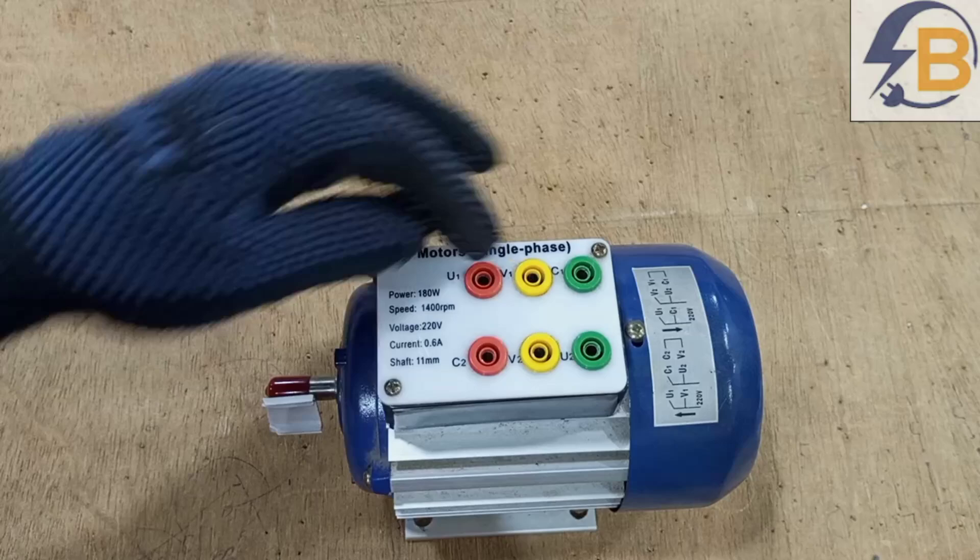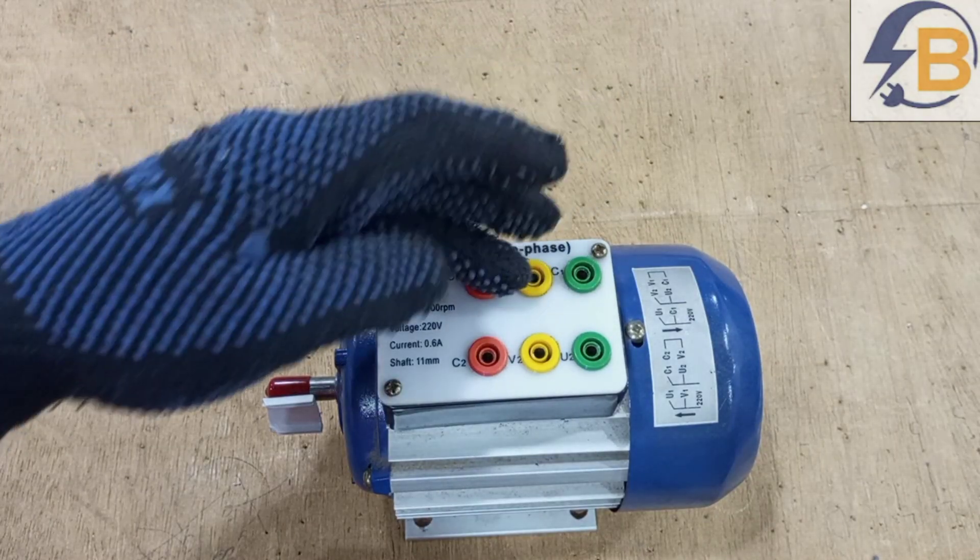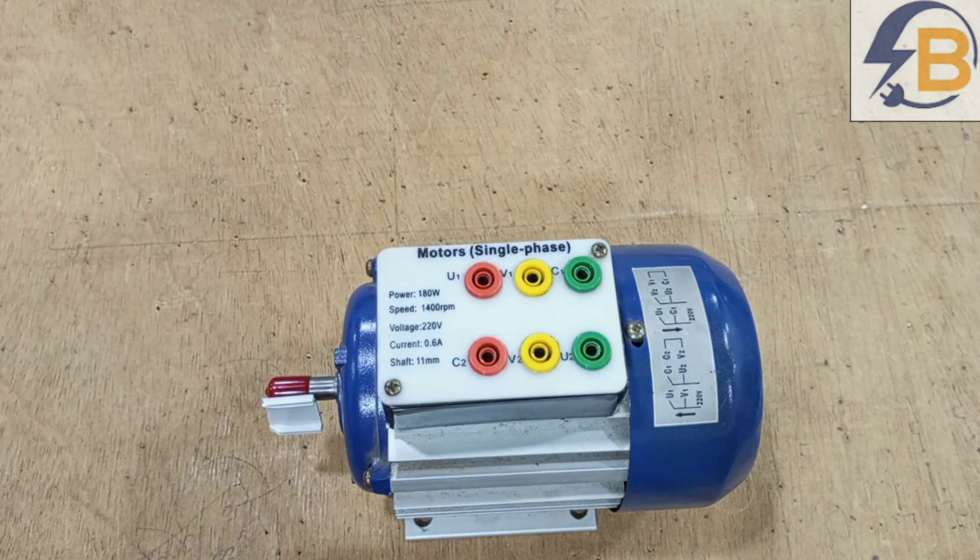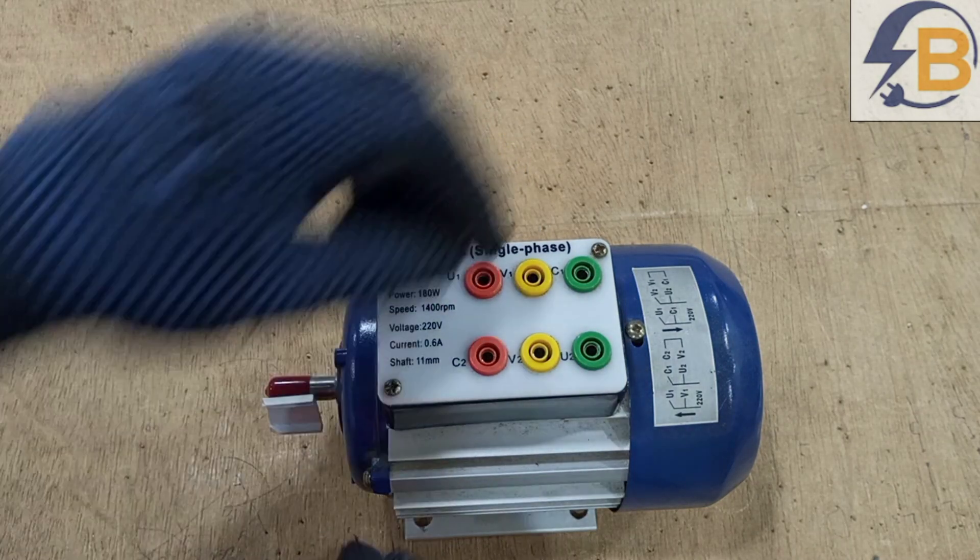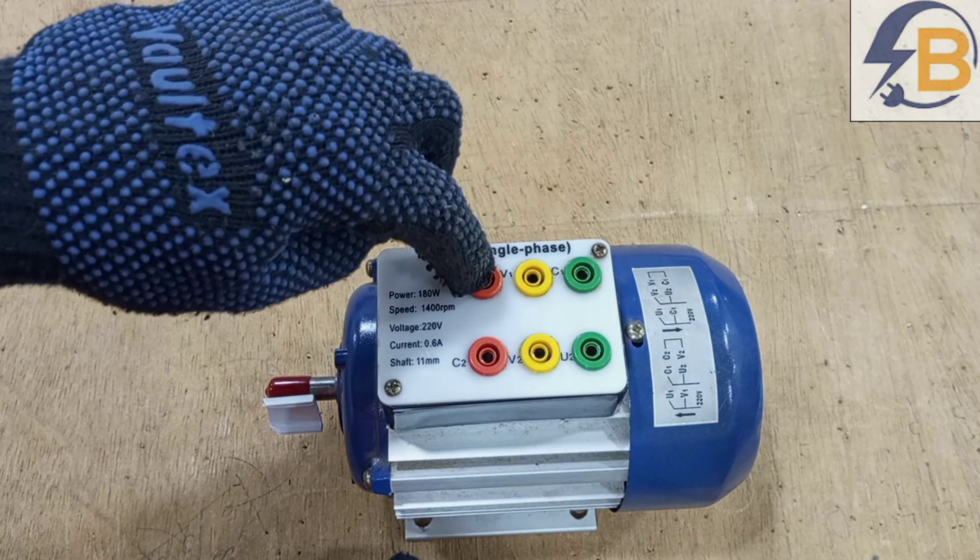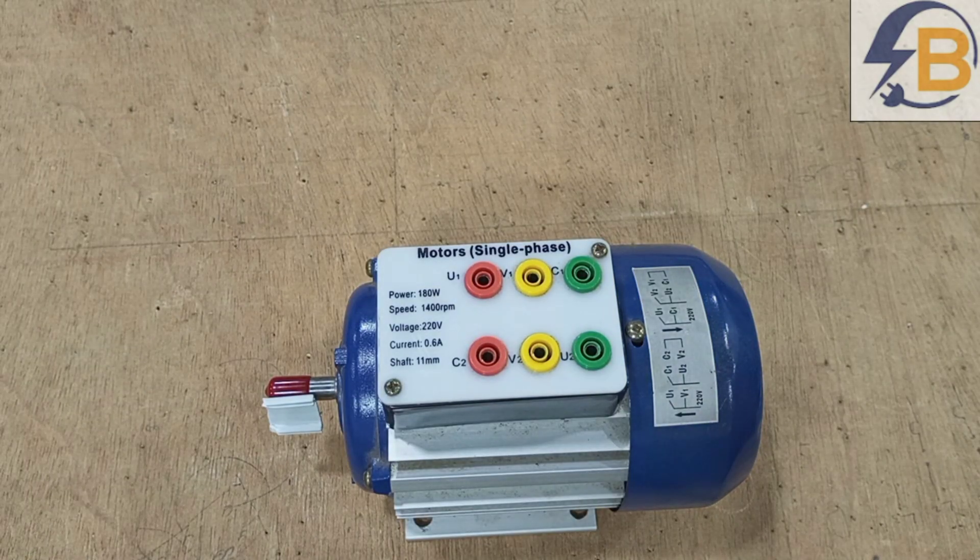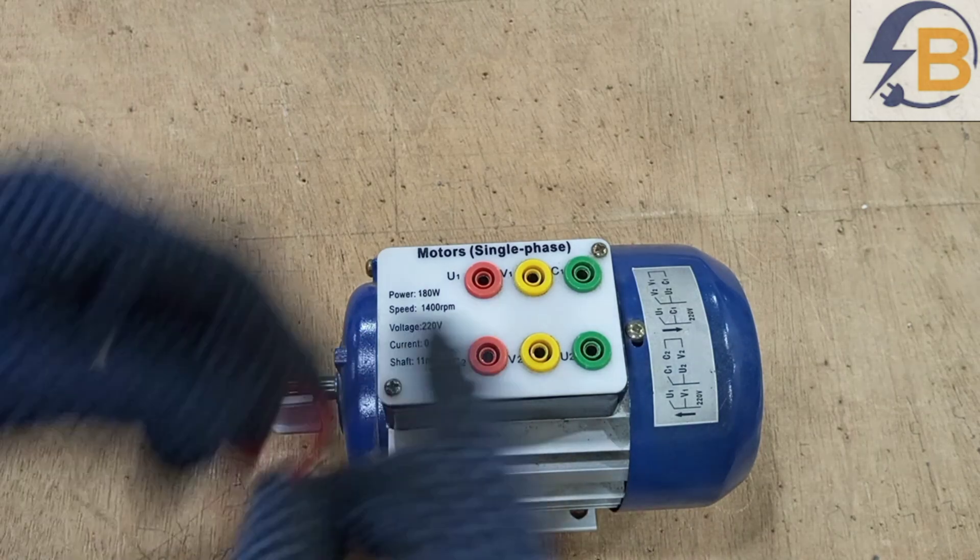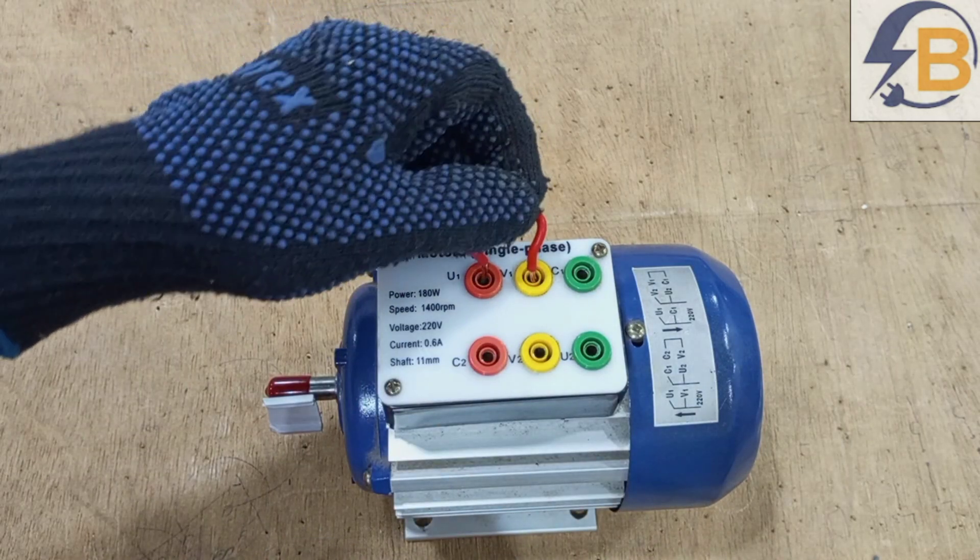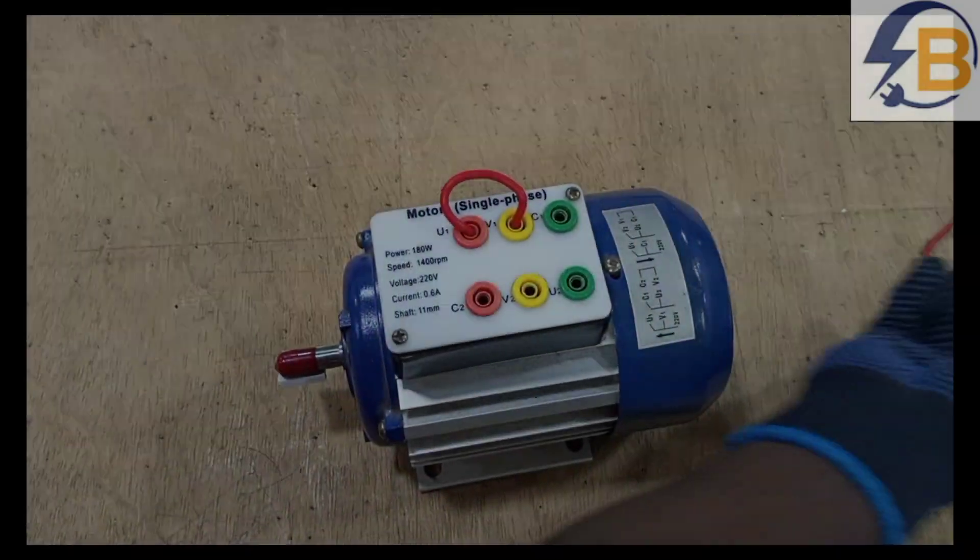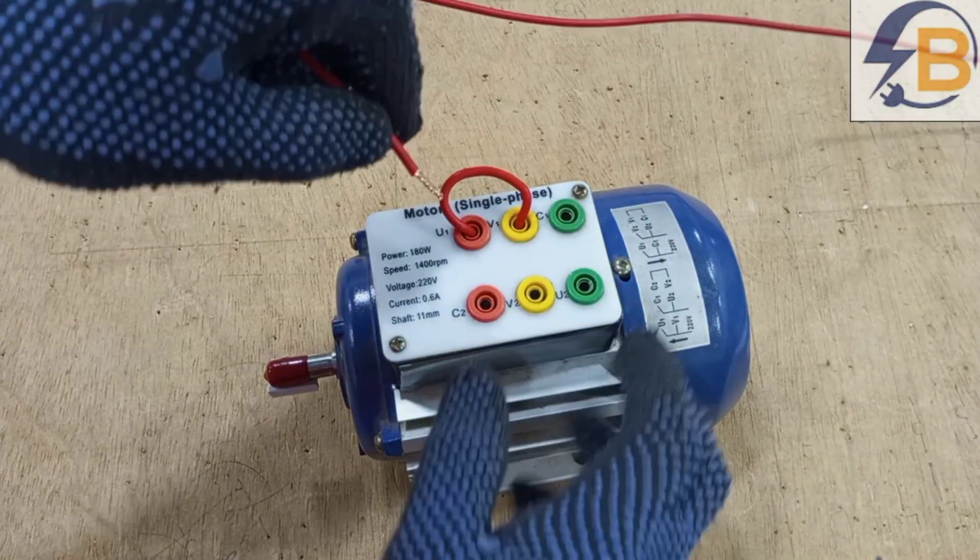So here we would have to bridge these two together. U1, V1. So that's the first thing we are going to do. We bridge U1 and then V1. So this is U1 and V1.